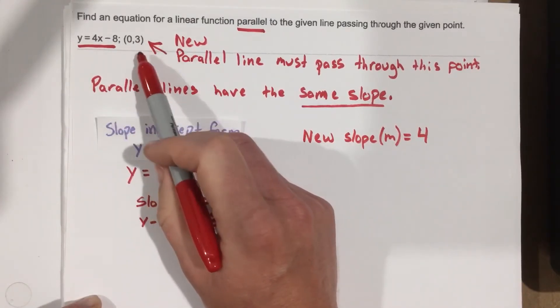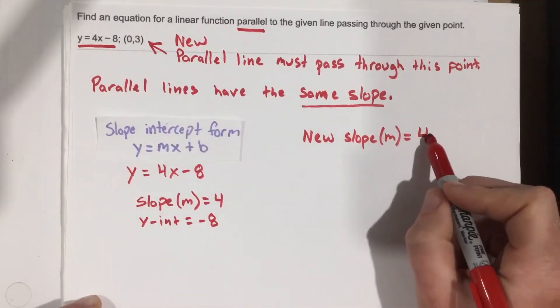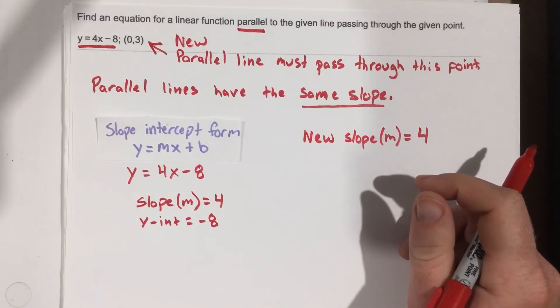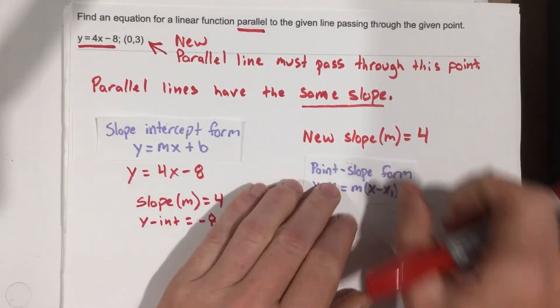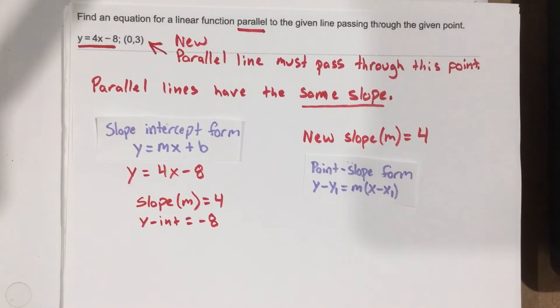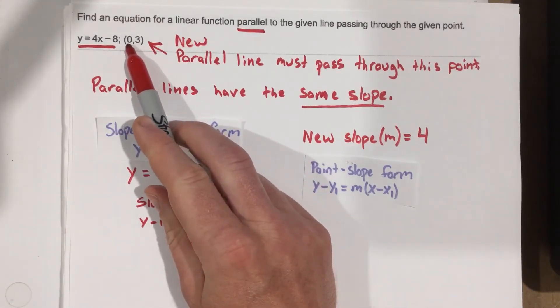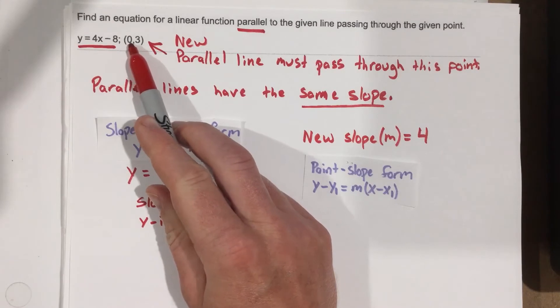So if I have a point and a slope, that's telling me I should probably use point-slope form to do this problem. But if you notice our point has 0 for x, and if we have 0 for x, we know that we're actually on the y-axis, which means this is actually the y-intercept.